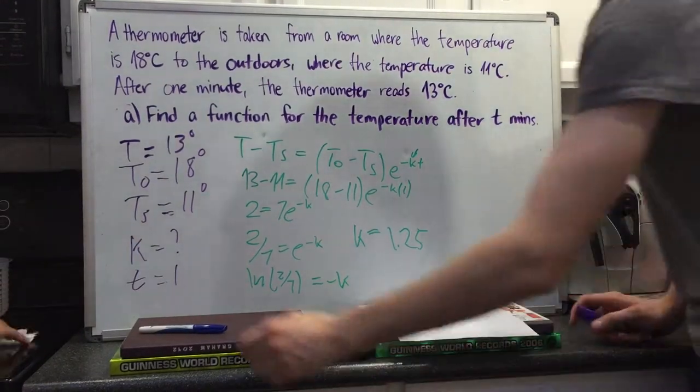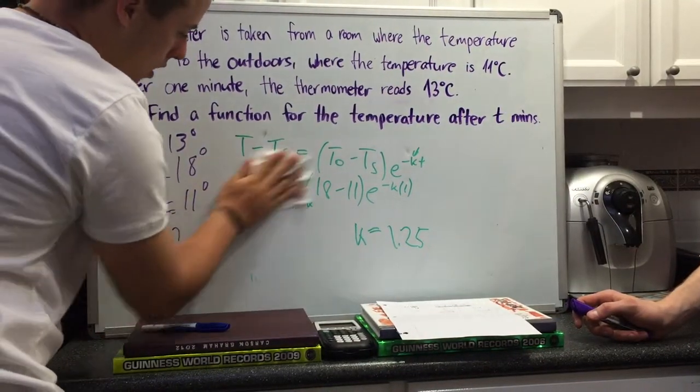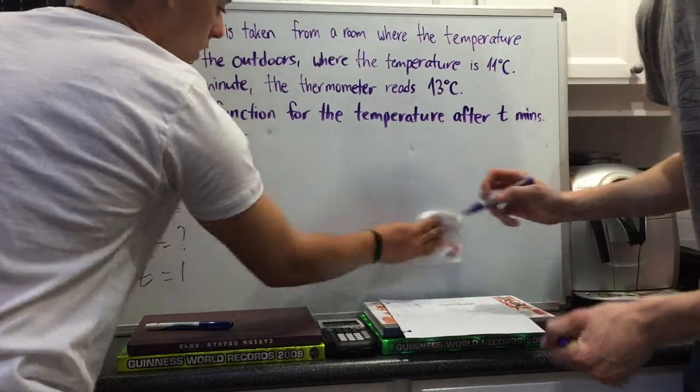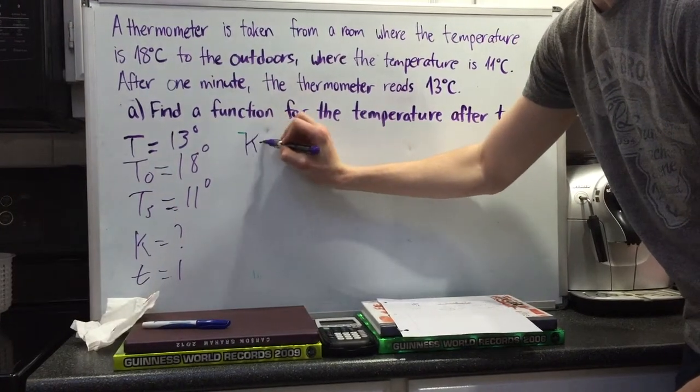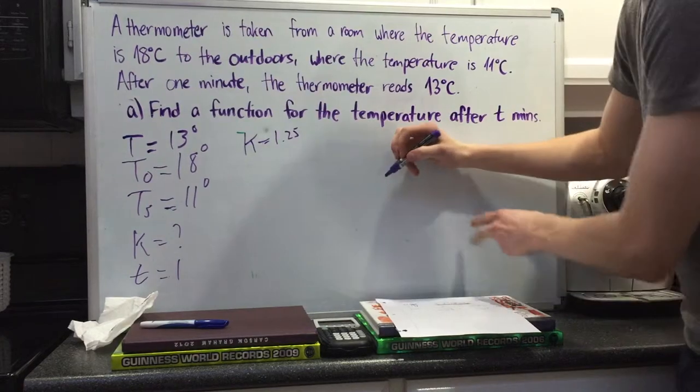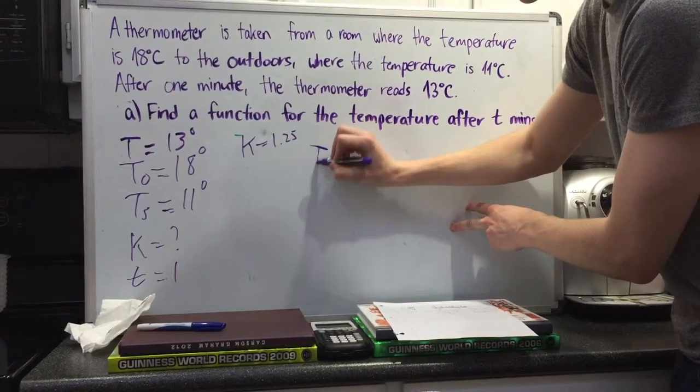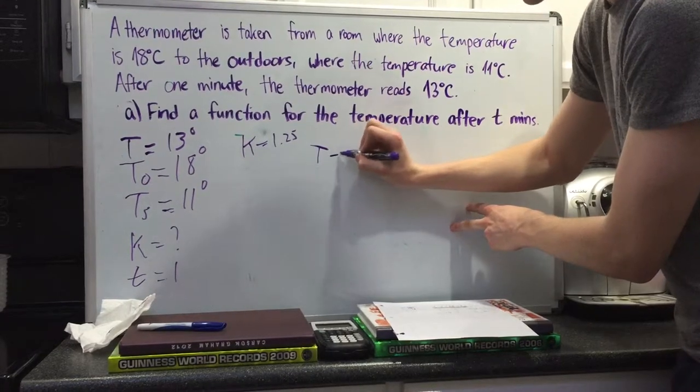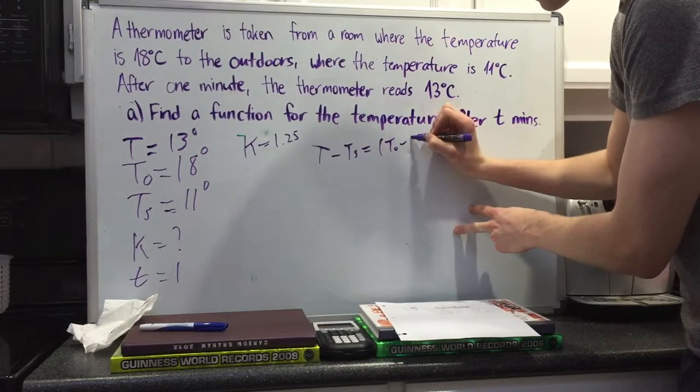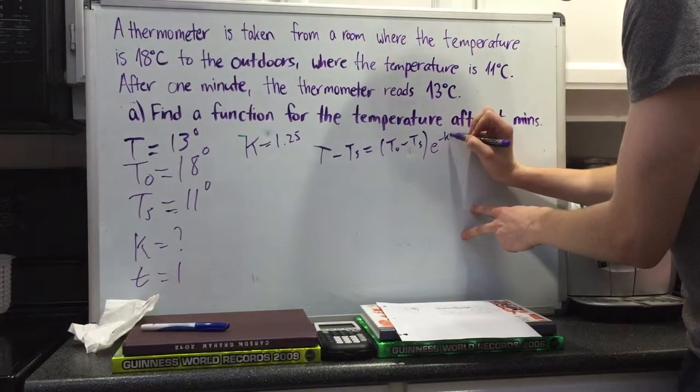Alright now, so that's all we need. I'm going to keep that, get rid of the rest. So now to double check our work is correct, we'll redo this and solve for time. So T minus T_S equals T naught minus T_S, e to the negative KT.